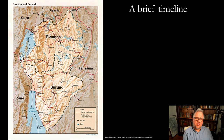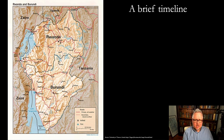Yoweri Museveni in Uganda is one of the longest-serving leaders in the world, in power since the 1980s. Both Laurent Kabila and his son have been in power since the end of the Civil War in the Democratic Republic of Congo, with a change only in the last couple of years. So leaders staying in power well beyond constitutional limits is not necessarily an uncommon thing — we'll see this over the course of the semester.